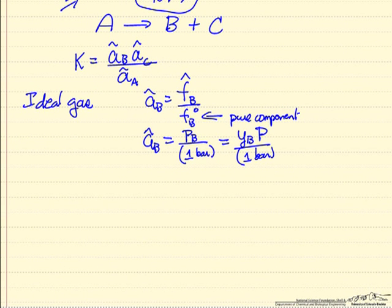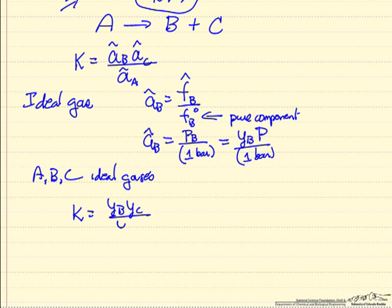And so this would be the activity of B that we would substitute into this equation. If all 3 are gases, so if A, B, and C are ideal gases then our equilibrium constant, mole fraction of B, mole fraction of C, and then pressure squared divided by pressure so we'd have pressure. Where we have to keep in mind the pressure is in units of bar and this is dimensionless.